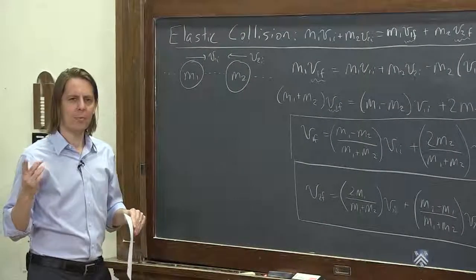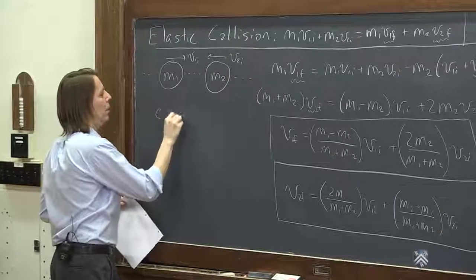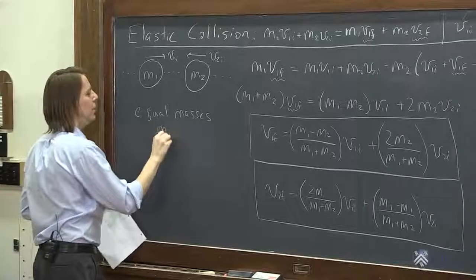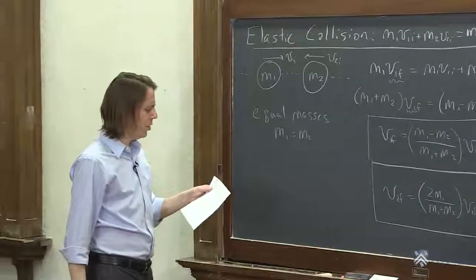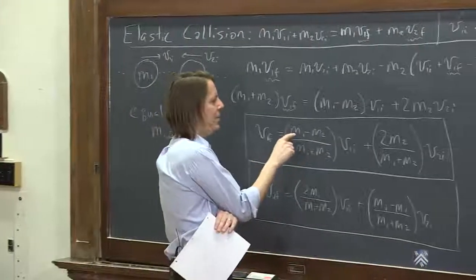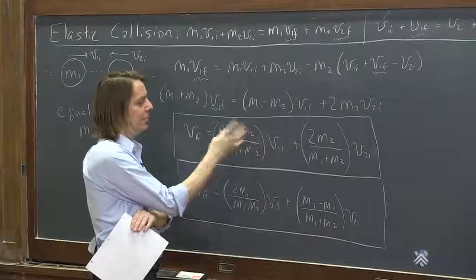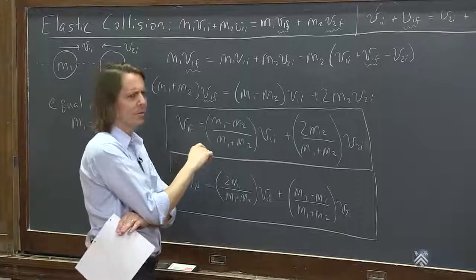So let's think about a couple of special cases. One is, what if the masses are equal? So let's look at equal masses. M1 equals M2. If M1 equals M2, let's look at this whole big mess. If M1 equals M2, this term is zero, right? M minus M is zero. So V1 final doesn't even depend on V1 initial. Weird.